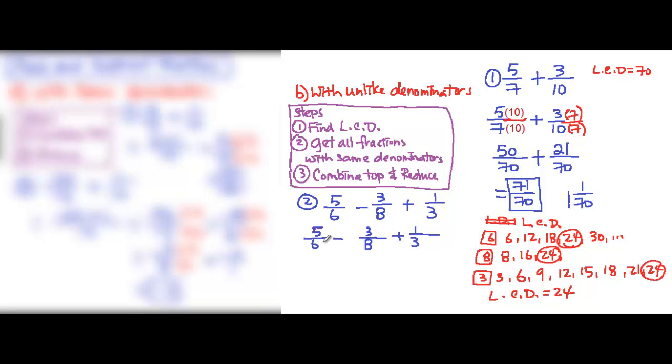To get 6 to become 24, we are going to need to multiply 4. Whatever you did at the bottom, do the same on top. For 8, it would be 8×3. Whatever you did at the bottom, do the same to the top. For 3, it would be 3×8, and do the same on top.